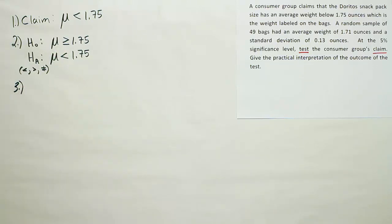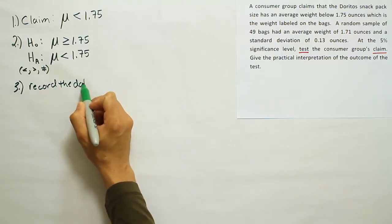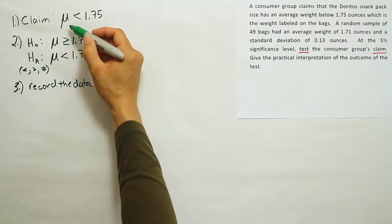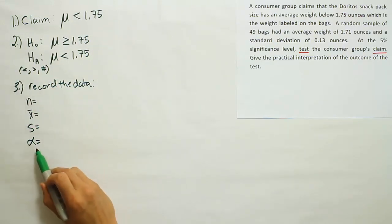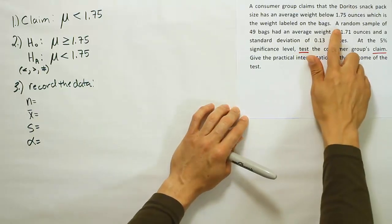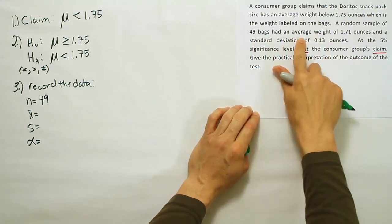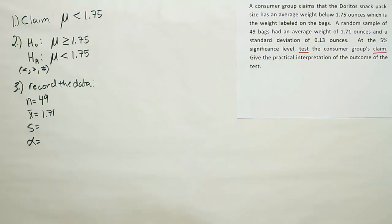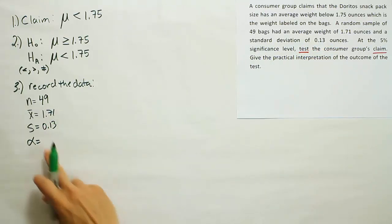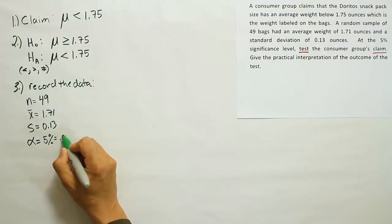Step three is to record the data. In a hypothesis test about the mean, you'll have n, sample mean x-bar, standard deviation, and alpha. If alpha is not given, assume 5%. From the problem: n is 49, x-bar is 1.71, standard deviation s is 0.13, and alpha is 5% since we're told it's a 5% significance level.